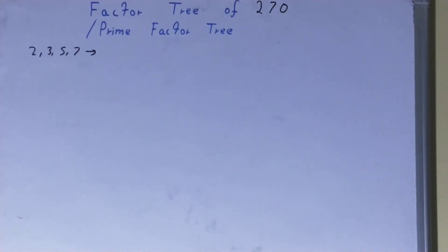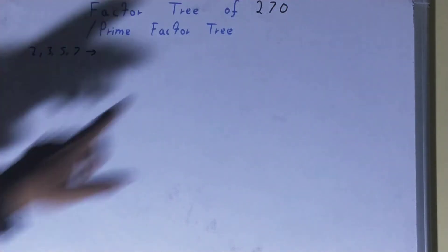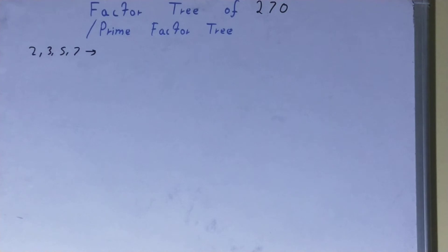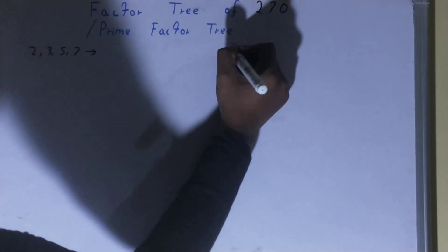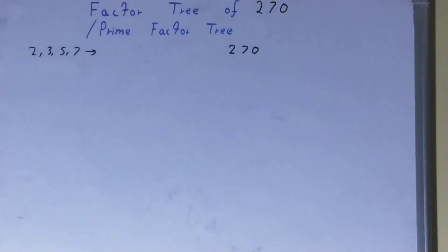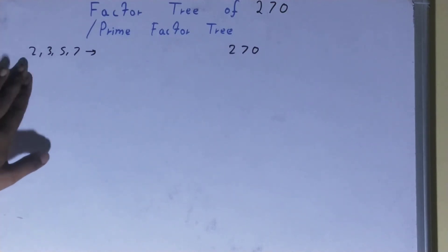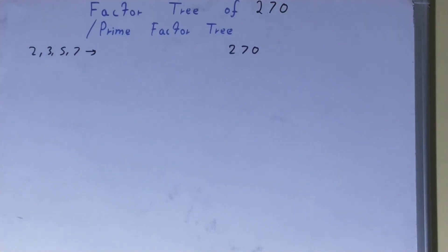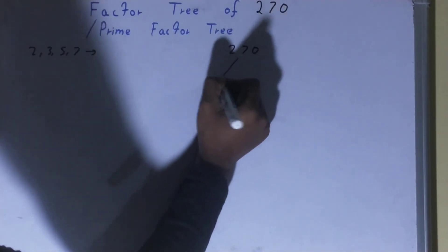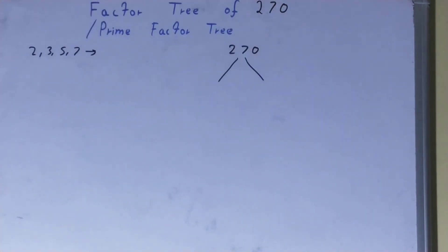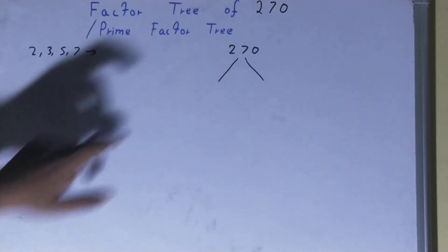Hello friends. In this video I'll be helping you with the factor tree of the number 270. To find it out, you need to write the number and before solving this you must know that the ending notes or terminating notes of a factor tree are made up of prime numbers like 2, 3, 5, 7, and so on. What we do is factorize the number into a group of two, and the rule is one of the numbers must be a prime number.